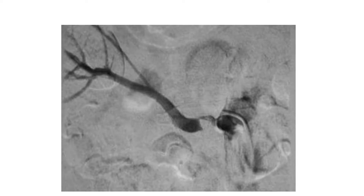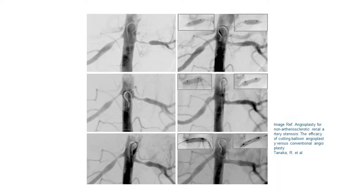On the other hand, we have a typical ostial lesion in renal artery stenosis due to underlying atherosclerosis, with the typical spill of atheroma from the aorta affecting the proximal segment and ostium of the renal artery. Takayasu disease results quite frequently in more smooth and long segments of stenosis affecting the proximal and middle segments of the renal arteries.